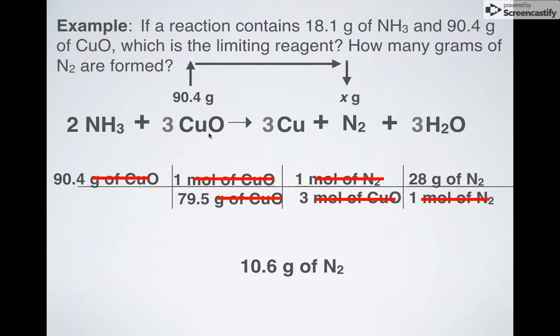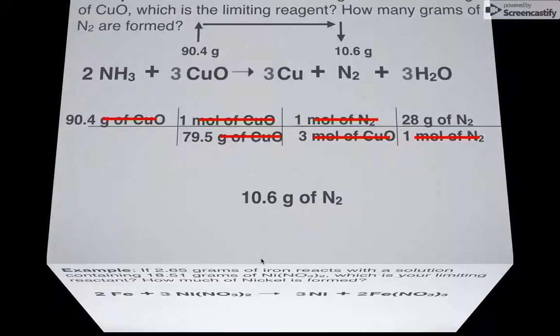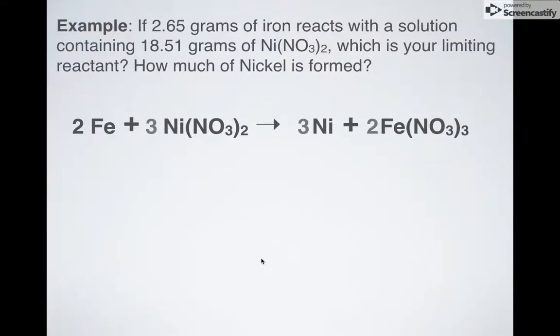And let's say you picked the wrong one. What if instead you picked ammonia as your limiting reactant? Well if you did that, you would get a number that's bigger than this and that would be incorrect. That's why you have to figure out your limiting reactant or reagent first. And I can plug that in then. 10.6.